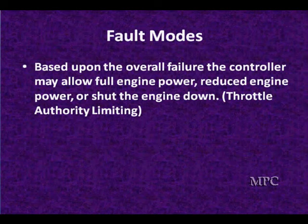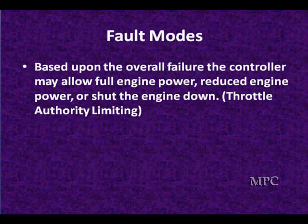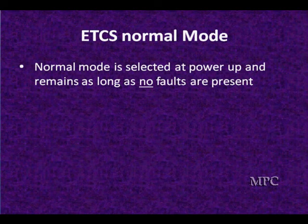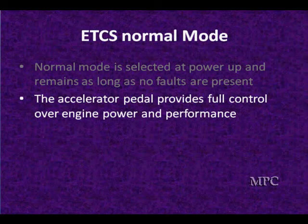Let's take a look and break these down. Based upon the overall failure, the control may allow full engine power, reduced engine power, or shut the engine down completely if it deems it unsafe. This is called throttle authority limiting. The full power mode, or normal mode, is selected at power-up by the controller and remains in effect as long as no faults are present. The accelerator pedal provides full control over engine power and performance.